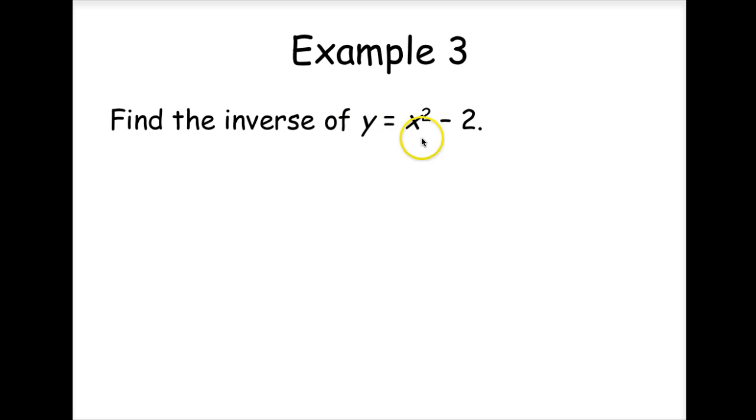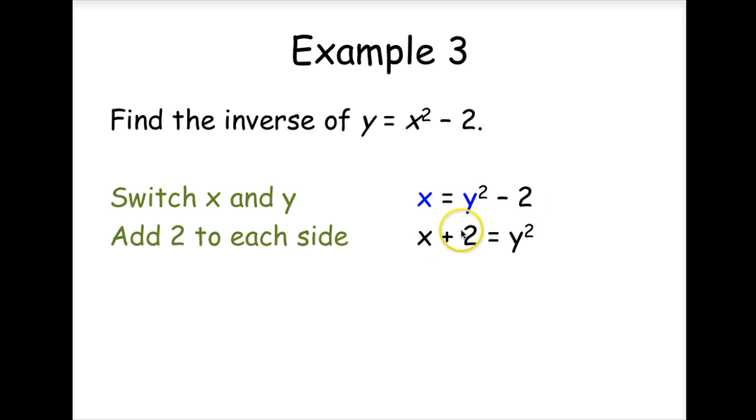Find the inverse of y equals x squared minus 2. Well, you start by switching the x and the y, and then simply solve for y. Add 2 to both sides, and then take the square root of each side. So y is equal to plus or minus the square root of x plus 2. So this is the inverse of this function.